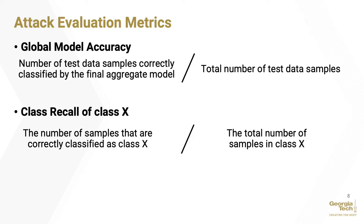There are numerous metrics that can be considered to evaluate the success of these attacks, but for this presentation we will use two. The first is global model accuracy after the final communication round, measured by calculating the number of samples correctly classified divided by the total number of samples in the test set. The second metric, class recall, gives us insight into the number of correctly classified samples in each class, calculated as the number of samples correctly classified as a given class divided by the total number of samples in that class.